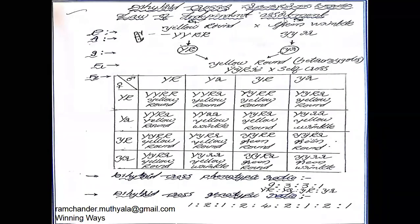The dihybrid cross is also called the Law of Independent Assortment. This law is based on the dihybrid experiment. According to this law, the genes for each pair of characters separate independently from those of other characters during gamete formation.